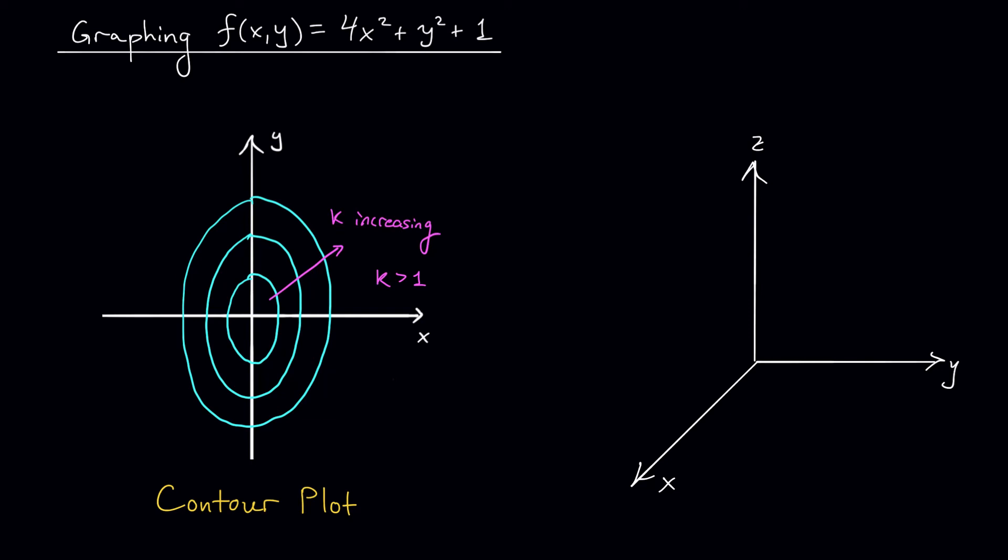They're long, skinny ellipses, right? So when k is pretty close to 1, the ellipses are fairly small. Maybe they look something like this around a height of 1. Notice that they're longer and skinnier in the y direction. And when k gets bigger, the ellipses get bigger as well. So I stack up more ellipses this way and the shape of my function is starting to emerge.